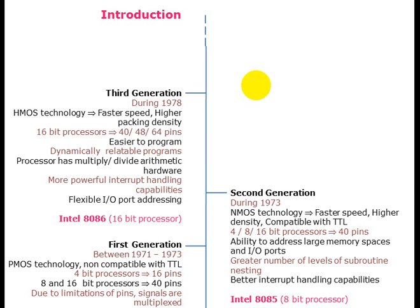The third generation, during 1978, uses NMOS technology, faster speed, higher packing density, and 16-bit processor with 40 or 48 pins. It has zero-to-program and dynamically relocatable programs. The processor has multiply and divide arithmetic hardware, more powerful interrupt handling capabilities, flexible IO port addressing modes. The third generation microprocessor is the 8086 — a 16-bit microprocessor.